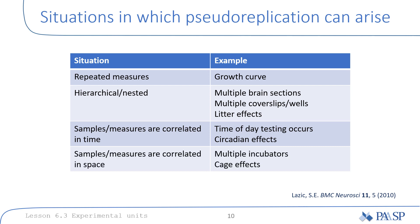Observations may also be correlated in space, because multiple measurements taken at one location will all be affected by the specific aspects of that location. For example, for 96-well plates, wells near the edges of the plate may evaporate faster than wells in the center, altering the concentration of substances such as metabolites, hormones, etc. Placing the control samples in the first column of the plate and treated samples in the second column would therefore not be a good idea, as it might lead to plate artifacts.